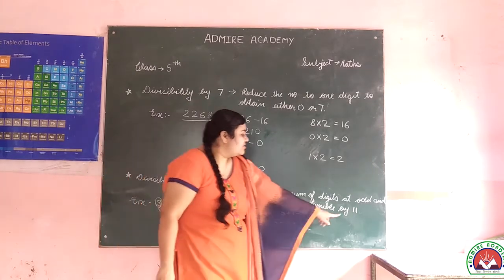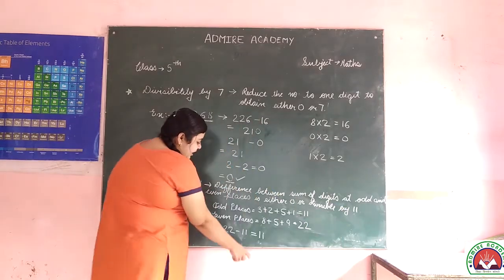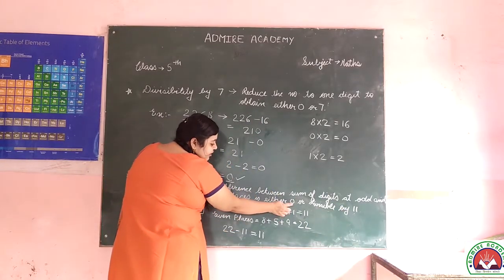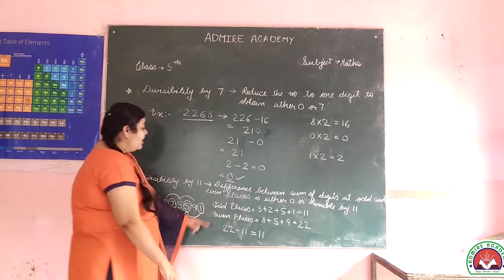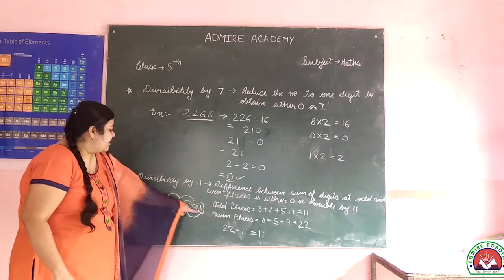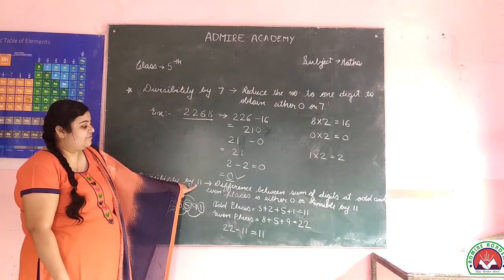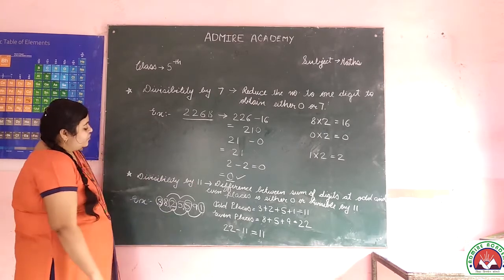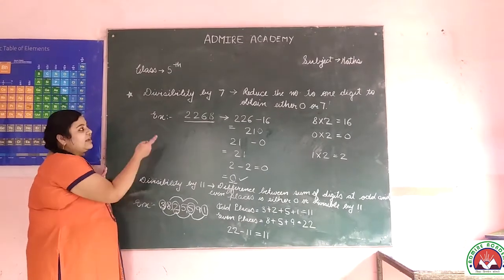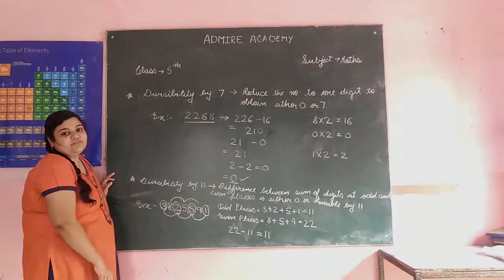So this is how you check the divisibility by 7 and 11.